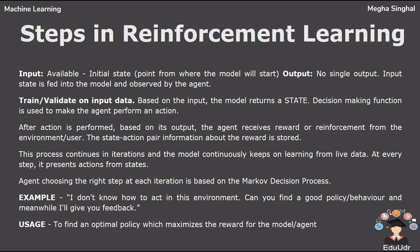In the steps of reinforcement learning, the input is known to us — which is an initial state — and there is no single output. The input state is fed into the model and observed by the agent. We then train and validate on the input data. Based on the input, the model returns a state, and a decision-making function is used to make the agent perform an action. After the action is performed, the agent receives a reward or reinforcement from the environment. This process continues in iterations and the model continuously keeps learning from live data. At every step it presents actions from its states, and the agent choosing the right step at each iteration is based on the Markov decision process.